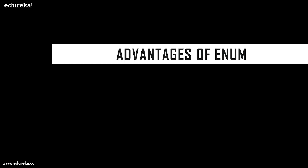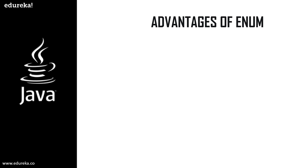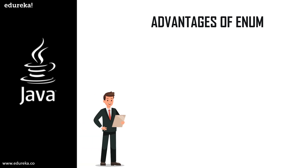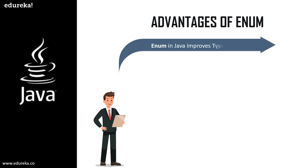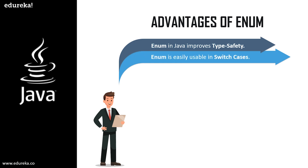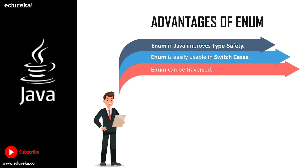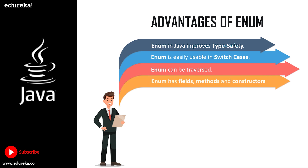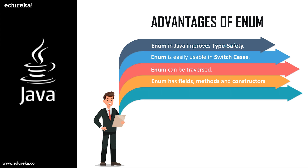Now let us move on to the advantages of enum. There are many advantages, but the major ones are: first, enum in Java improves type safety. Second, enum is easily usable in switch cases. Third, enum can be easily traversed. Fourth, enum has fields, methods, and constructors. And fifth, enum can implement interfaces.